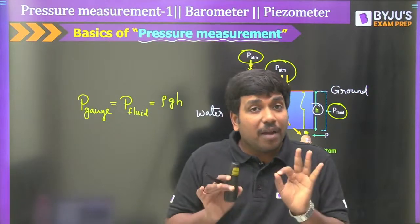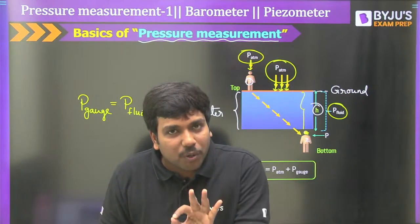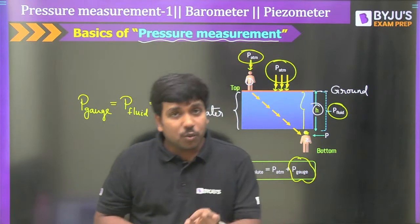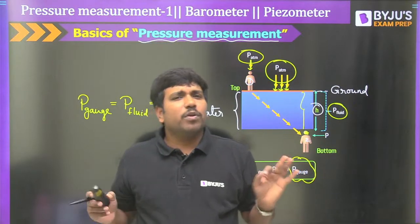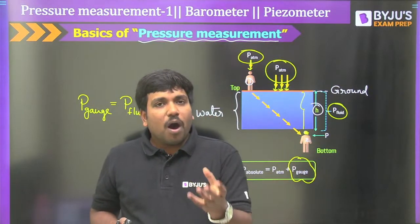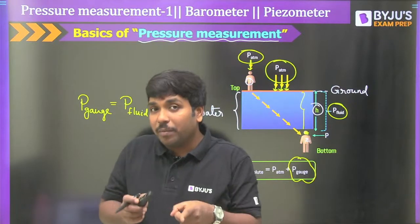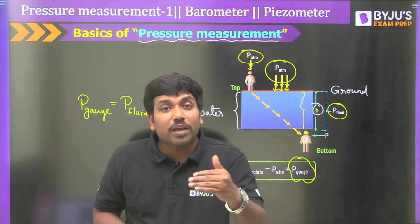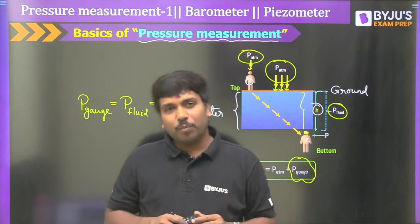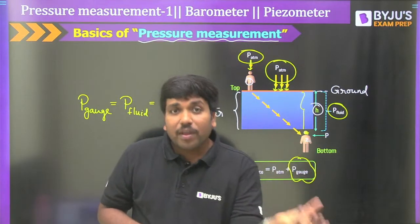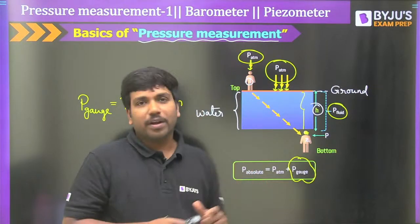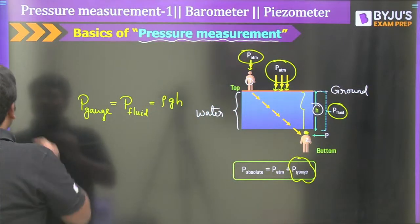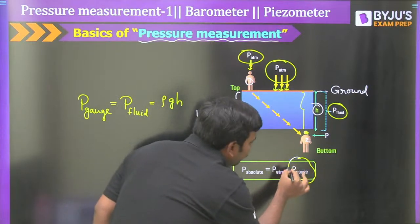Most sensors give gauge pressure information. To get absolute pressure: add atmospheric pressure to gauge pressure. To measure atmospheric pressure, we use a special device called a barometer. The barometer always provides atmospheric pressure information, which is added to gauge pressure to get absolute pressure. Also, there are some sensors and devices which give absolute pressure information directly.